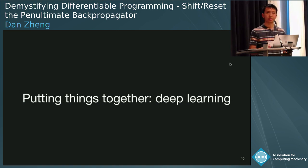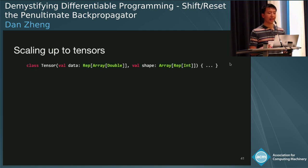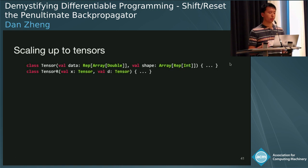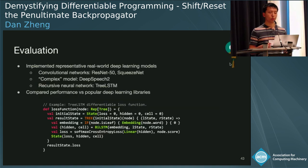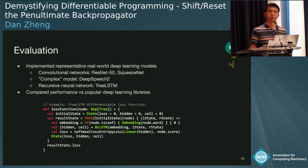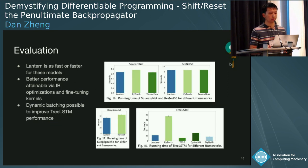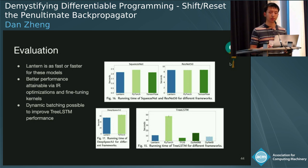Now let's put things together to see how this works for deep learning. To scale up, we represent n-dimensional arrays with a shape of dimensions and data of that shape. To make them differentiable we use the same value-derivative pair, and we define operations on tensors in the same way. We evaluated our approach in a deep learning library called Lantern, available on GitHub. We implemented representative real-world models including ResNet-50 and SqueezeNet for image recognition, DeepSpeech 2 for audio speech recognition, and a recursive neural network using tree traversal. Comparing performance versus popular deep learning libraries, Lantern is as fast or faster: about the same for SqueezeNet and ResNet, a bit faster than PyTorch for DeepSpeech due to better kernel choices, and significantly faster than PyTorch for TreeLSTM, the complex recursive model.